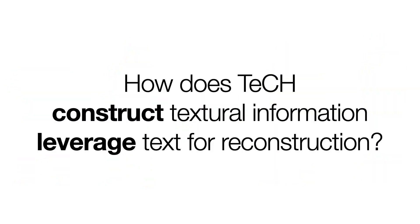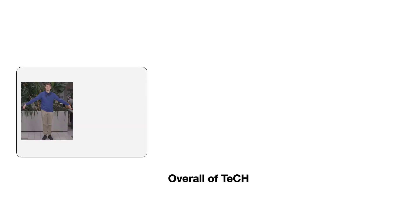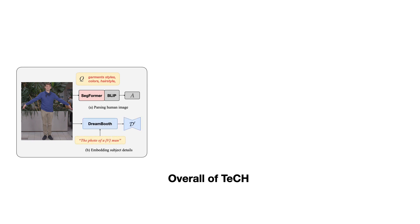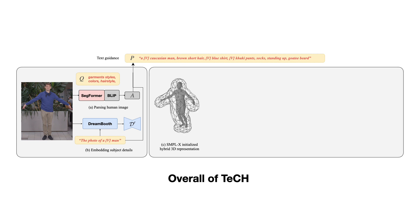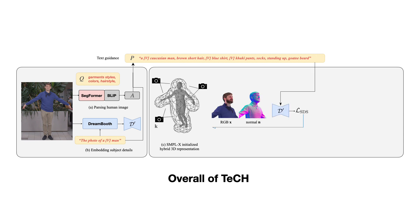How does TEC construct textual information and leverage text for reconstruction? TEC takes an image of a human as input. TEC's guidance is constructed using the Garment Parsing Model SegFormer and the VQA model BLIP to retrieve human appearance attributes stored in the prompt A. Subject-specific appearance is embedded into a unique identifier token V via DreamBooth. Based on the generated prompt P = V + A, TEC optimizes both geometry and texture represented by a hybrid DMTEC using score distillation sampling at multiple views, together with mask and reconstruction losses in the visible regions.